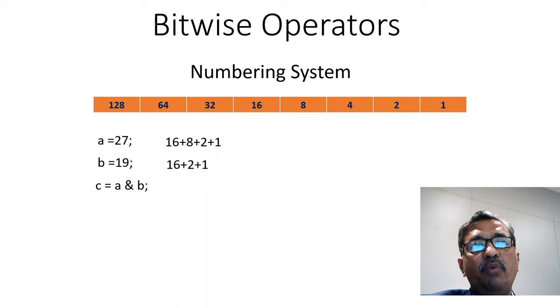Now we want to perform operation C equal to A and B. We want to perform a bitwise AND operator. Now, don't convert the number into binary. You consider the numbers which are found in both A and B, which is nothing but 16 plus 2 plus 1. So value of C will be 19.